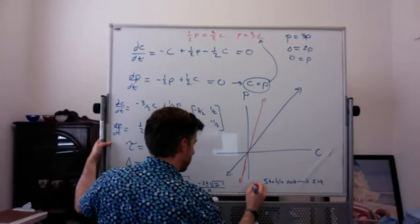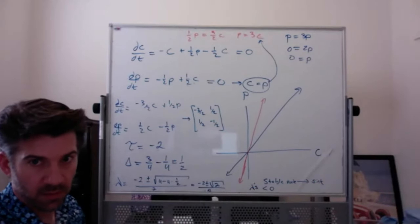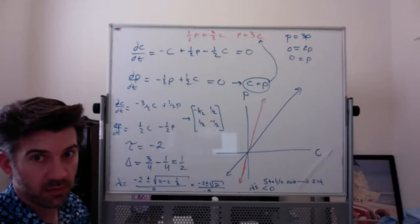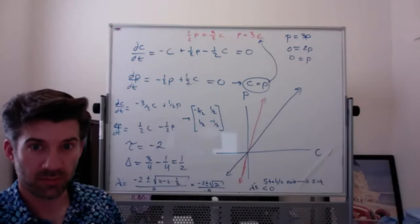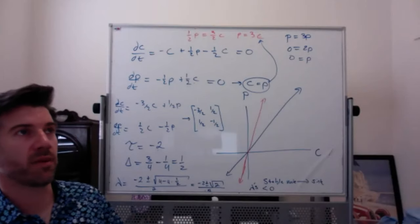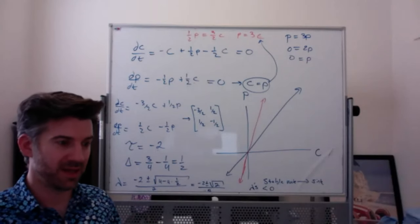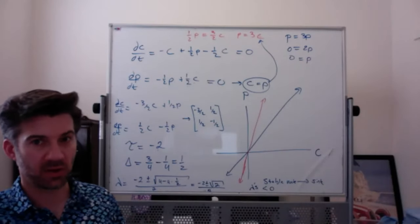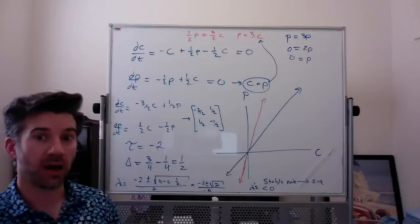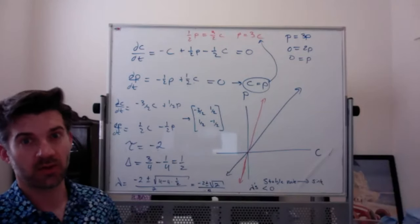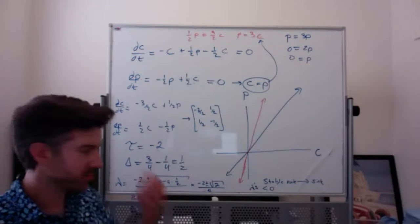Are saddles considered unstable? Yes, saddles are considered unstable. You might add the caveat that if you start on the eigenvector line corresponding to the negative eigenvalue, you will end up going towards the equilibrium — but any other starting point will push you away. So there is one path of stability for a saddle, but they're generally considered unstable.